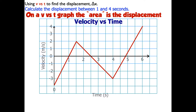So in this case, it's at 1 and 4 seconds. There's 1 second, there's 4 seconds, and that's going to give me a boundary for my areas — that's where I've got my lines right here. Now I need to find the area between the boundaries, and the area is going to be defined as the shape between the curve and the axis.